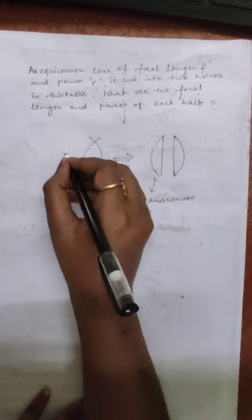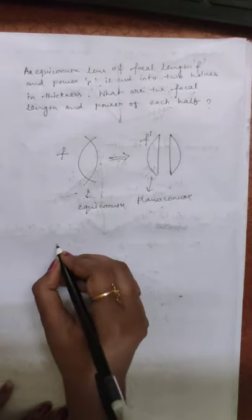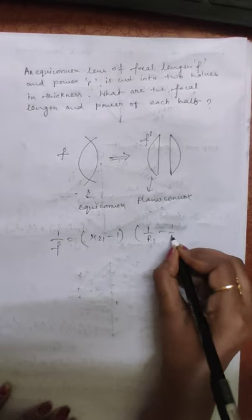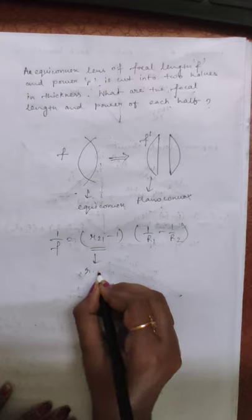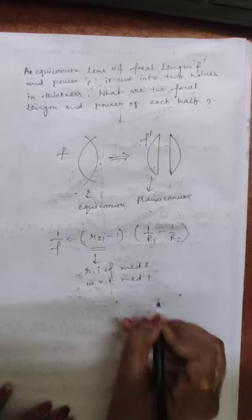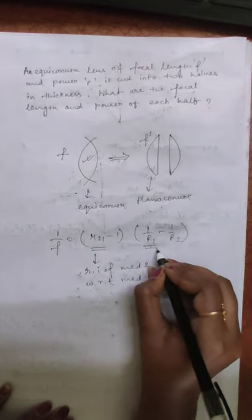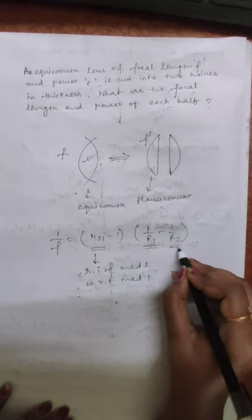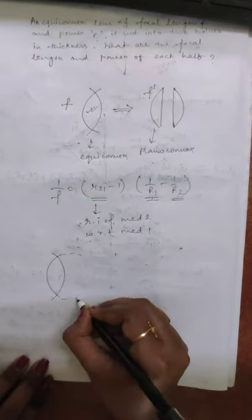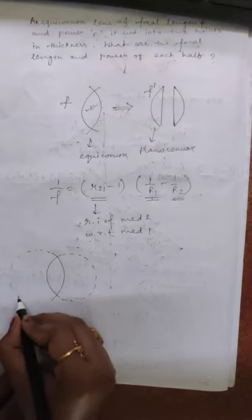Suppose the focal length of the equiconvex lens was f and the focal length of the planoconvex half is f dash. We know the lens maker formula: 1/f = (μ₂₁ - 1)(1/R1 - 1/R2), where μ₂₁ means refractive index of medium 2 with respect to medium 1 — that is, the refractive index of the material of the lens with respect to air. R1 is the radius of curvature of the first surface and R2 is the radius of curvature of the second surface. If we extend the first surface of the lens we get a sphere, and if we extend the second surface we get another sphere.